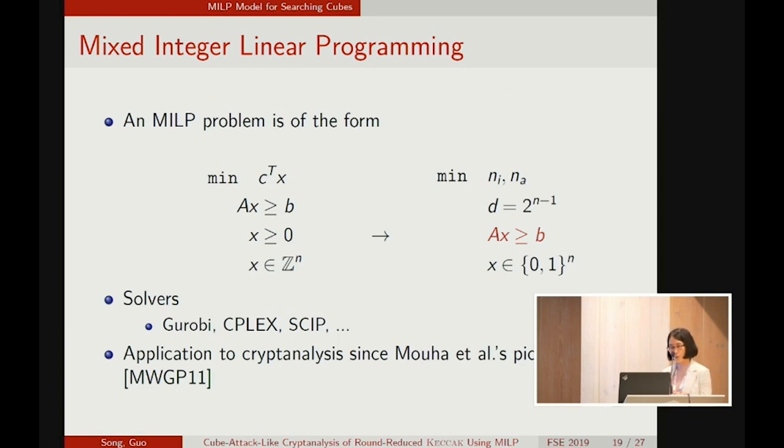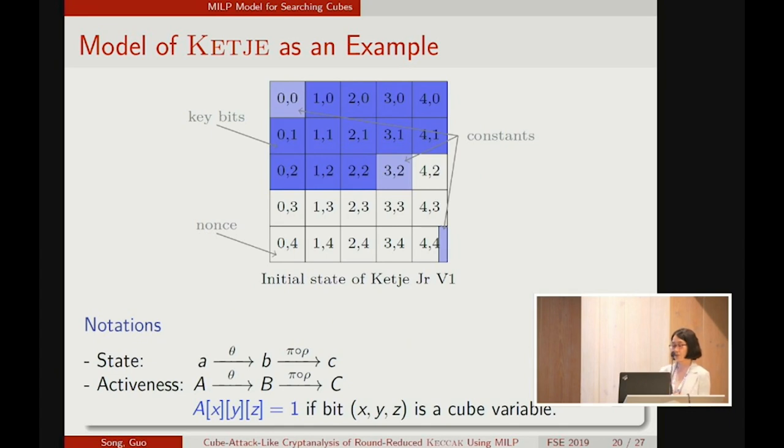Mixed integer linear programming has been widely used in cryptanalysis since Mouha's pioneering work. An MILP problem is of the form with an objective function subjected to some linear inequalities. The variables are usually chosen from the integers. In our case, the objective is to minimize nI and nA under the constraint that the dimension is set to 2^(n-1) together with other inequalities. And we can find the variables to be binary. So the problem to solve is to find the set of inequalities that can fulfill our goal.